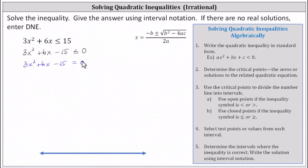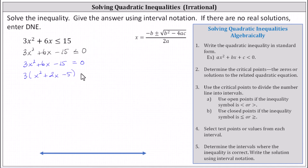The first step in factoring is to factor out the greatest common factor, which in this case is three, giving us three times the quantity x squared plus 2x minus five equals zero.